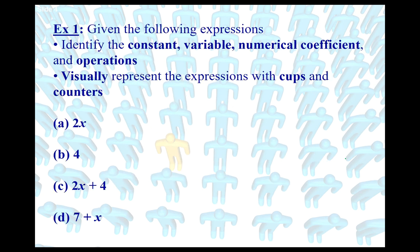Given the following expressions, we want to identify the constant, variable, numerical coefficient, and operations, and then visually represent them with cups and counters. I'm going to abbreviate constant as C, variable as capital V, numerical coefficient as NC, and operator as O.